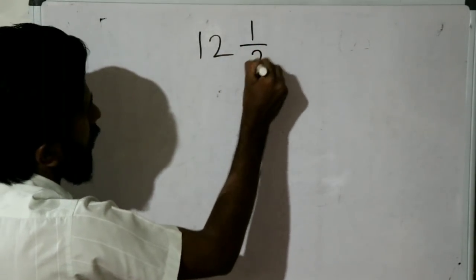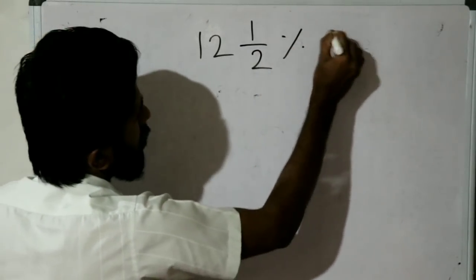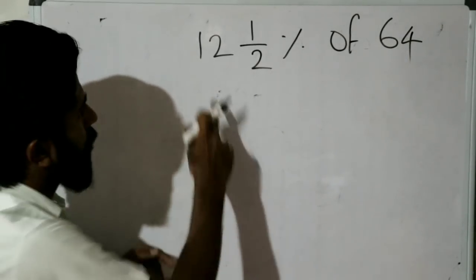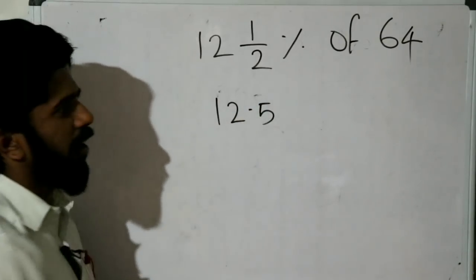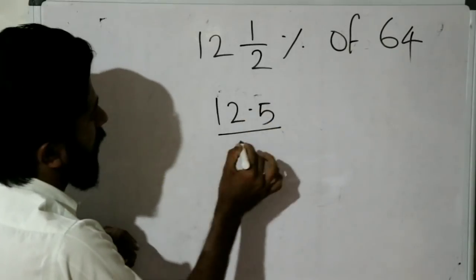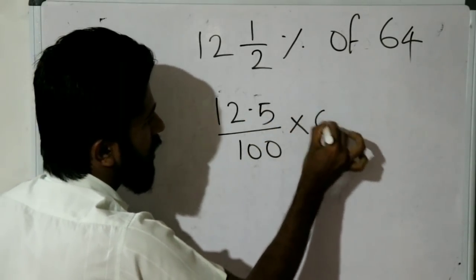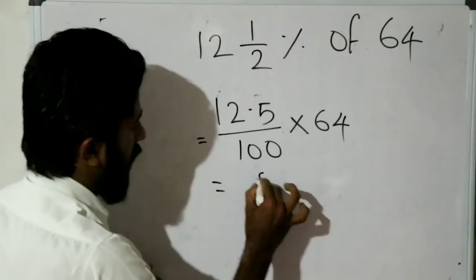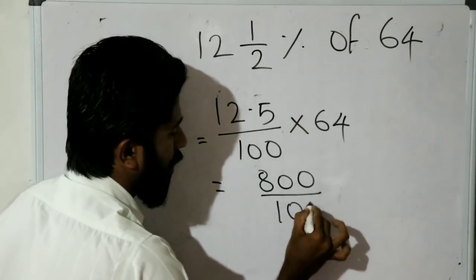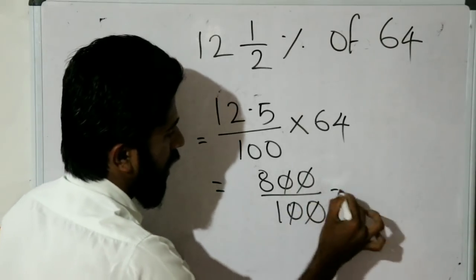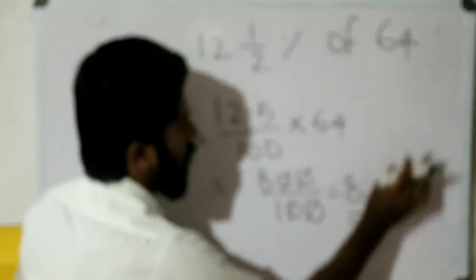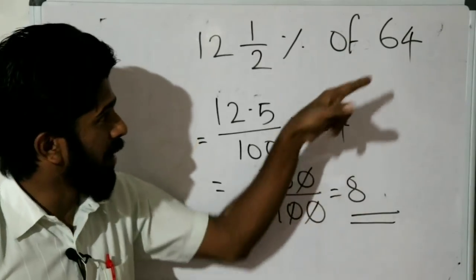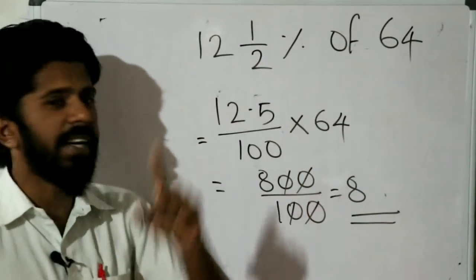Next: 11 and 1/2 percentage of 64. That is 12.5 divided by 100 into 64. 12.5 into 64: therefore the answer is 800 divided by 100, equal to 8. The correct answer is 8. So 11½ percentage of 64 is 8.